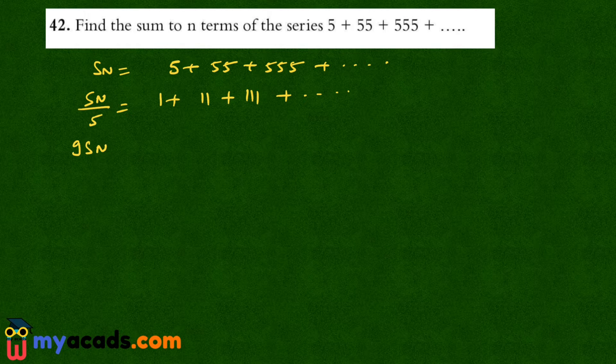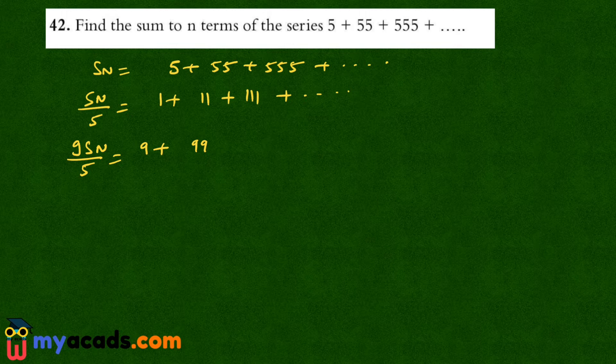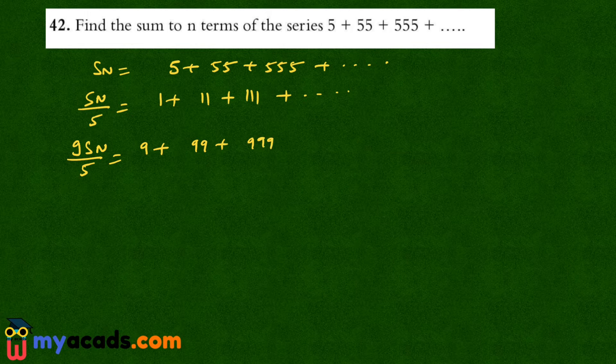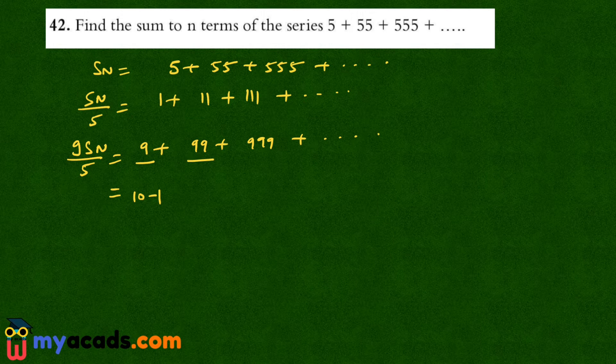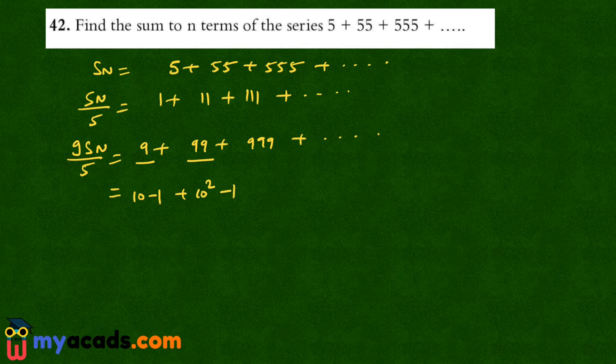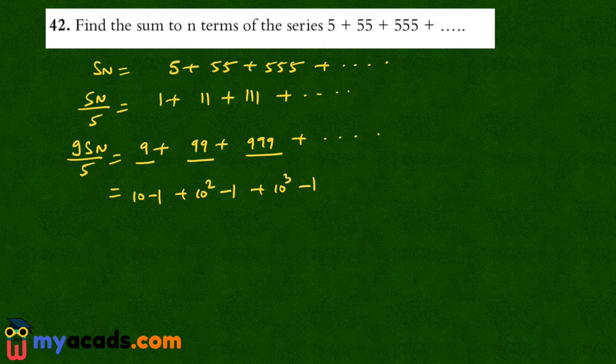So it will become 9Sn by 5 equals to 9 plus 99 plus 999 and so on. Now I can write this 9 as 10 minus 1, this 99 as 10 raised to the power 2 minus 1, and 999 is 10 raised to the power 3 minus 1 and so on.